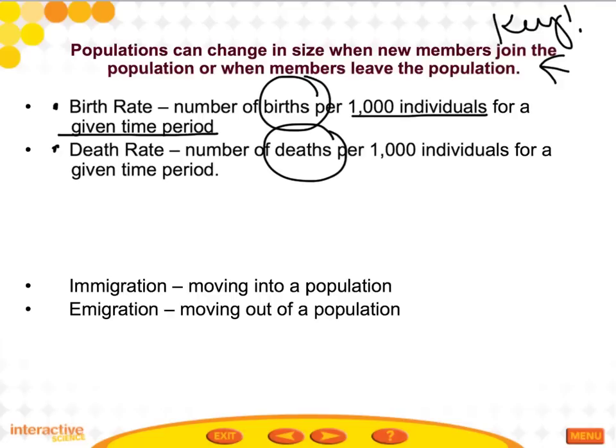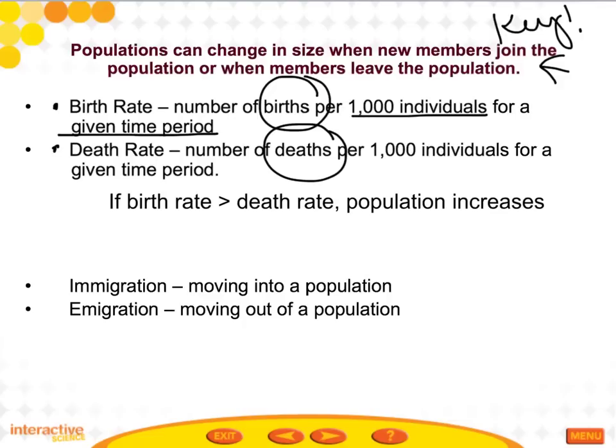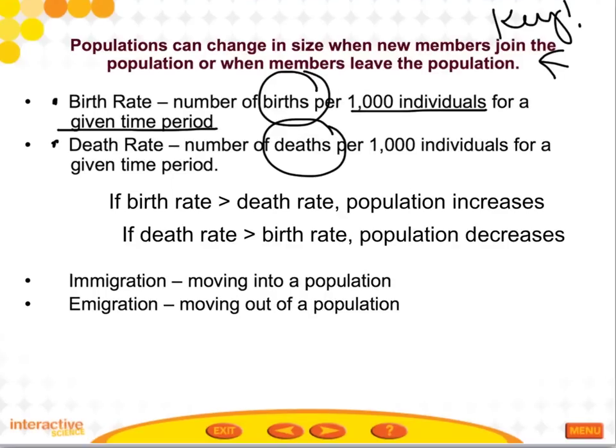Birth and death rate can be written as a mathematical greater-than statement. If birth rate is greater than death rate, population increases. If death rate is greater than birth rate, population decreases.